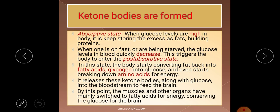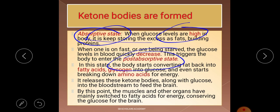Ketone bodies serve as an important metabolic fuel when glucose is absent or at low levels. They provide energy to peripheral tissue, particularly the heart and skeletal muscle. The absorptive state is when glucose is high and the body stores excess as fat and builds protein. The post-absorptive state occurs when the body is fasting or starved, and glucose levels decrease rapidly.